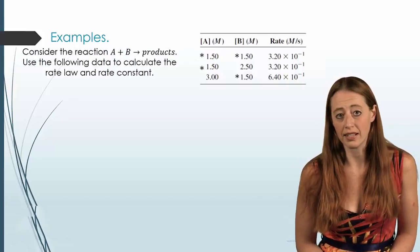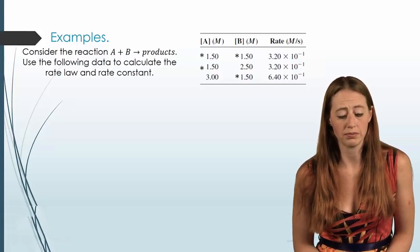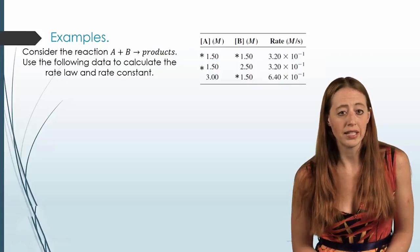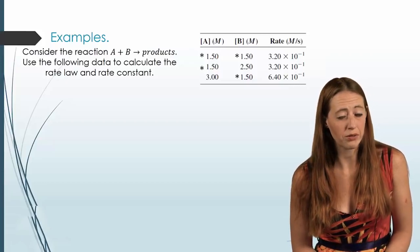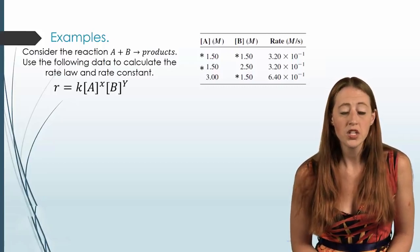Now, if you look at where I put the stars, you can see that in each case, we have something being held constant. So in the first two stars, in trial one and trial two, you can see that we're holding A constant. But in trial one and trial three, if you just compare those two, we're holding B constant.